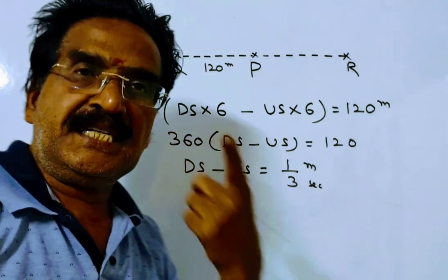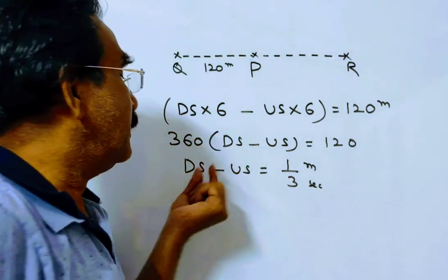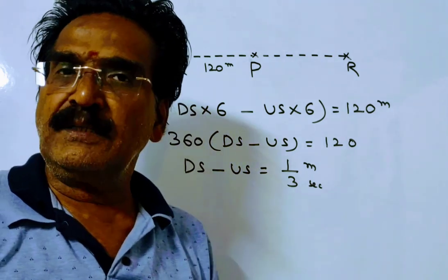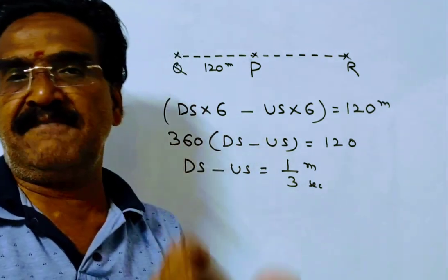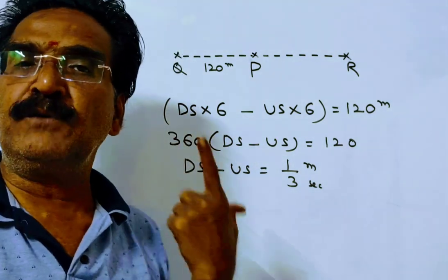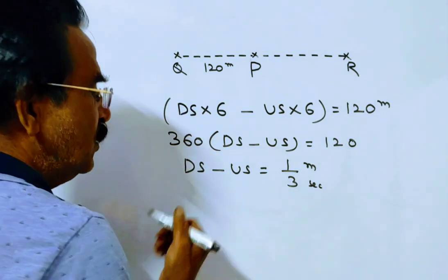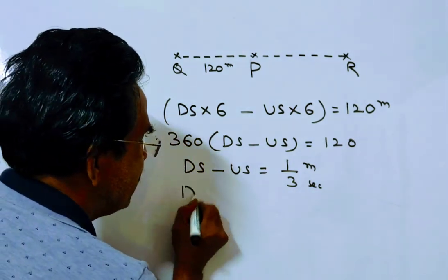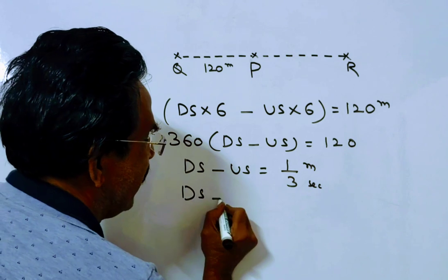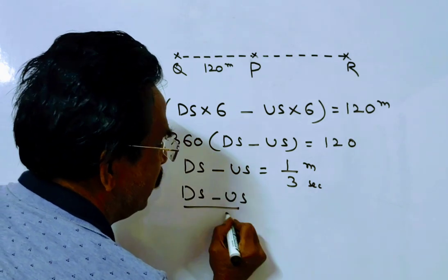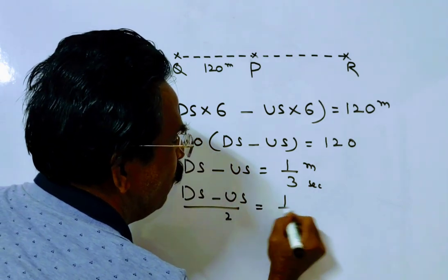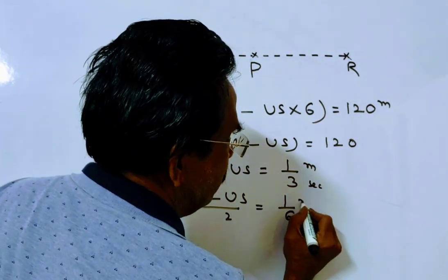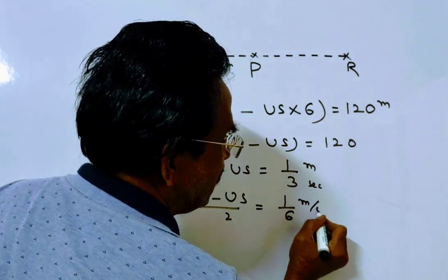We know the stream velocity. When downstream velocity and upstream velocity are known, the stream velocity y equals (ds minus us) divided by 2. So that is equal to (1/3) divided by 2, which equals 1/6 meters per second.